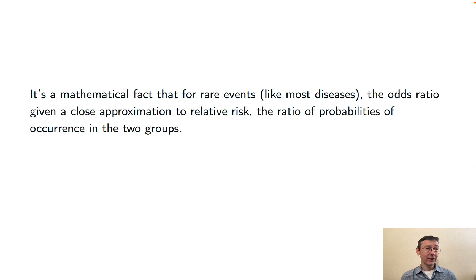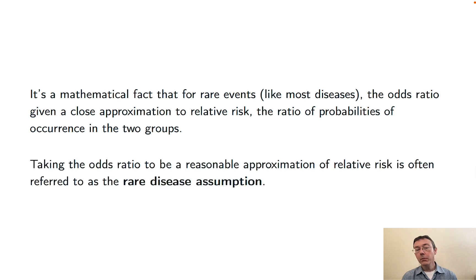It's a mathematical fact that for rare events, like rare diseases, the odds ratio gives a good approximation to relative risk, which of course is the ratio of probabilities for occurrence between the two groups. And frequently in medical literature, you'll see odds ratios computed and taken to be approximations for that relative risk. This is called the rare disease assumption.